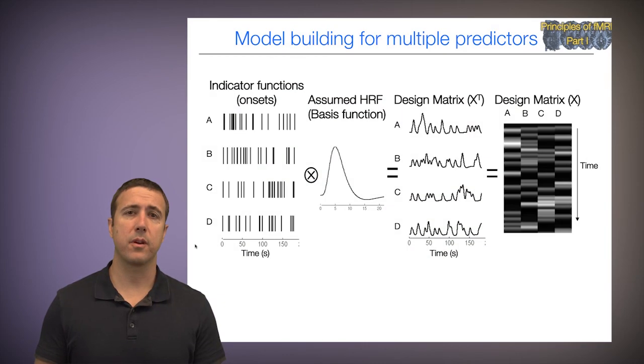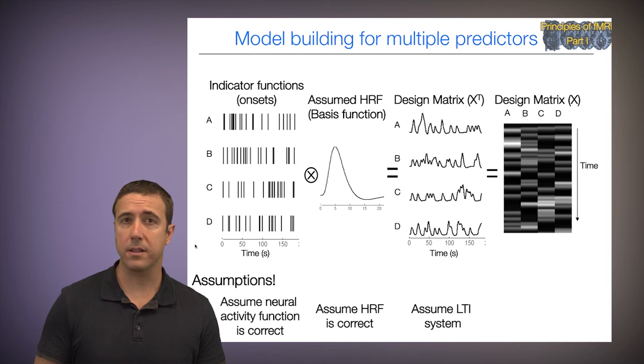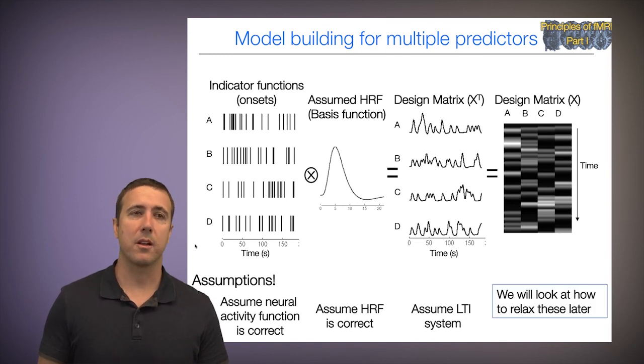One final note before we move forward. We looked at model building for multiple predictors. And let's just very quickly remind ourselves that there are a number of assumptions that we have to make. To build this model, I have to assume that the neural activity function is correct, little sticks or blocks. We have to assume that the HRF is correct. And we have to assume a linear time invariant system. These three assumptions together allow me to construct the design matrix. All of these assumptions are wrong to some degree. All models are wrong, but some are useful, as the statistician George Box once said. And we'll look at how to relax some of these assumptions in certain ways in later lectures.